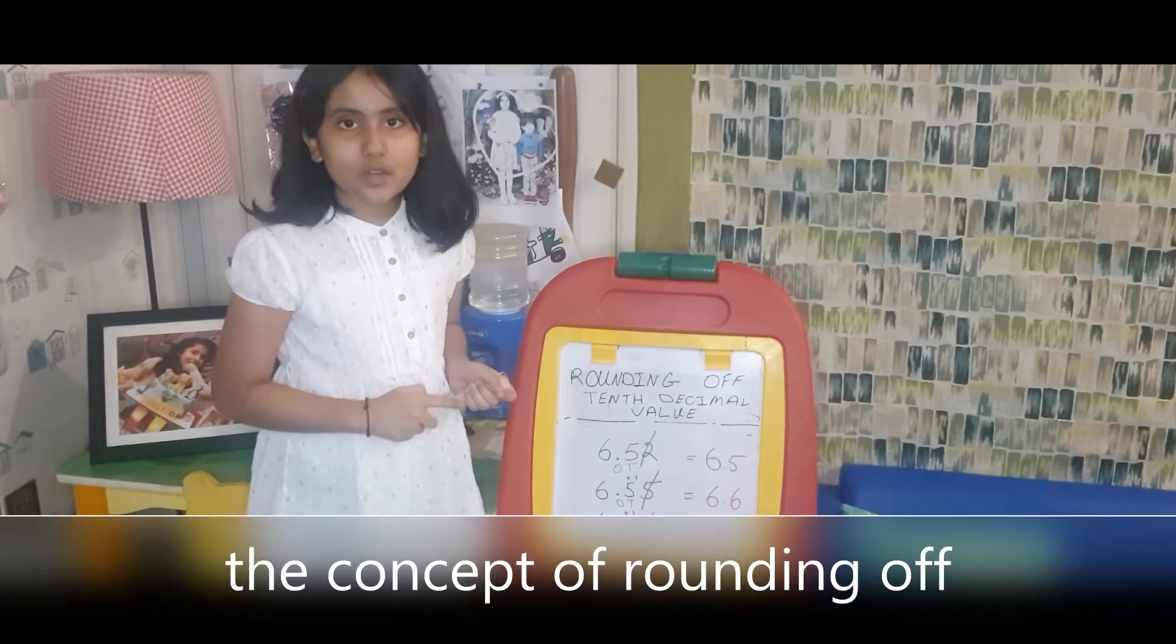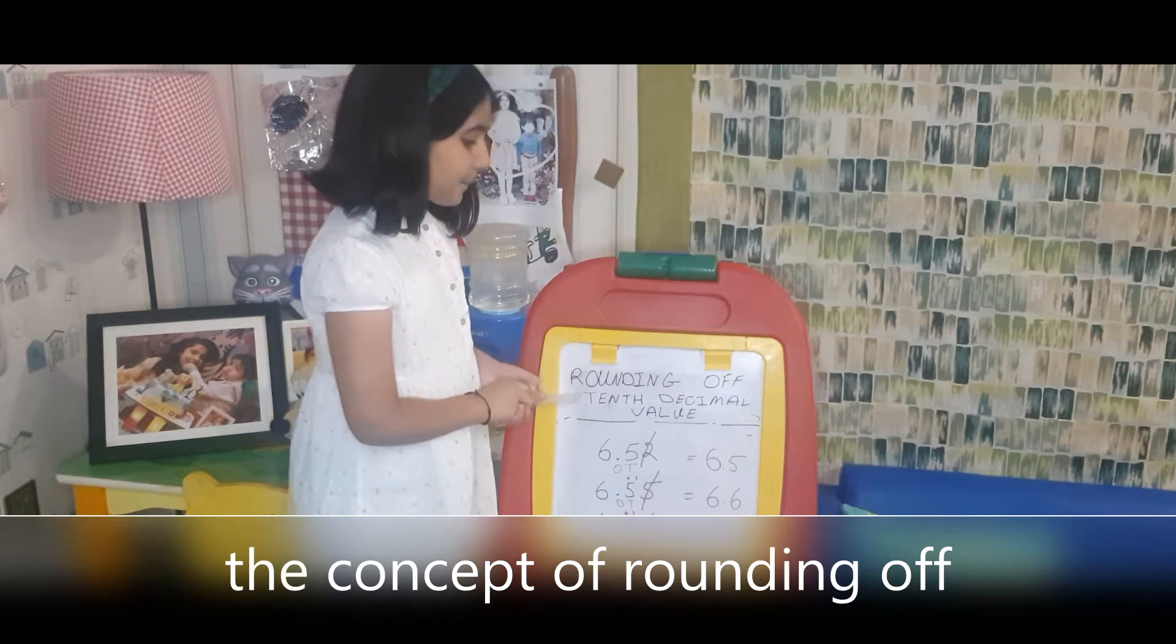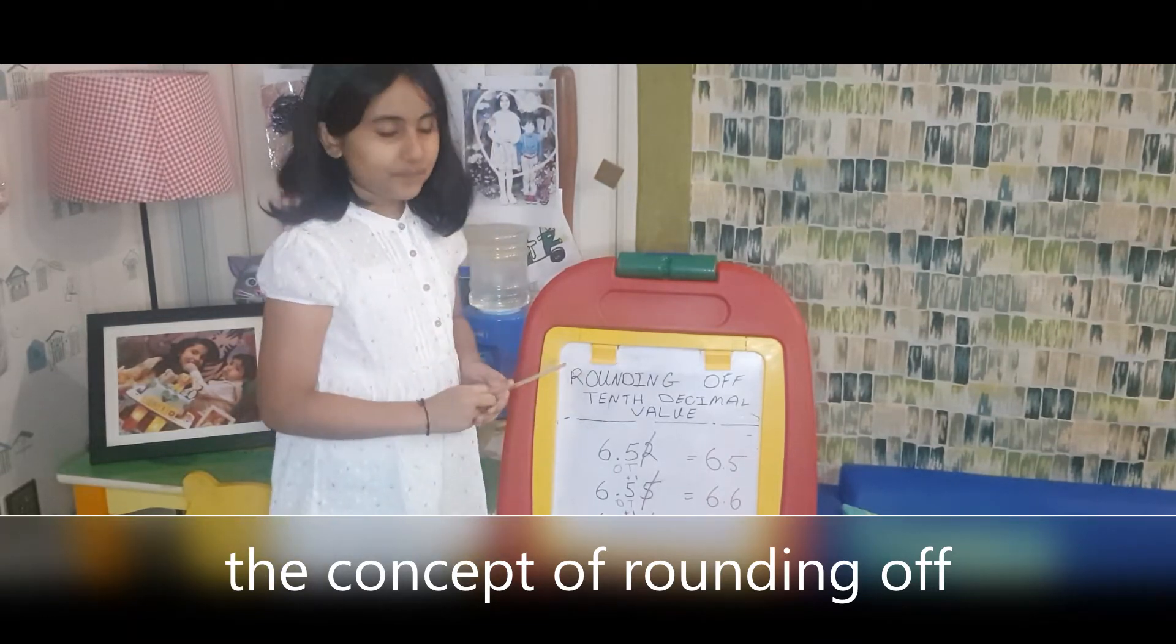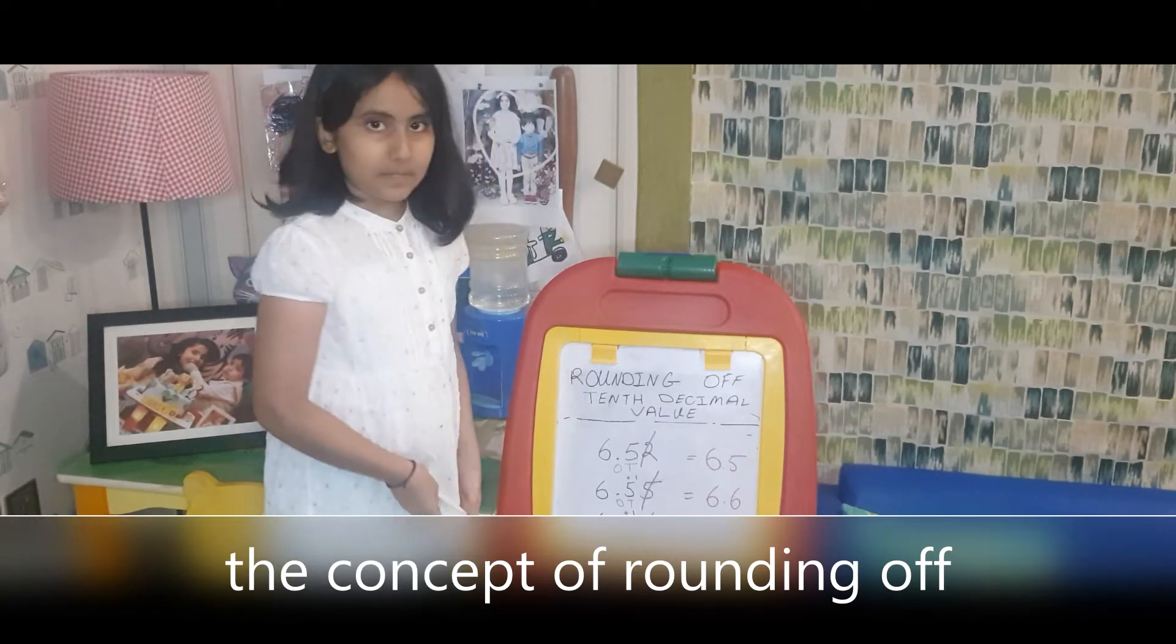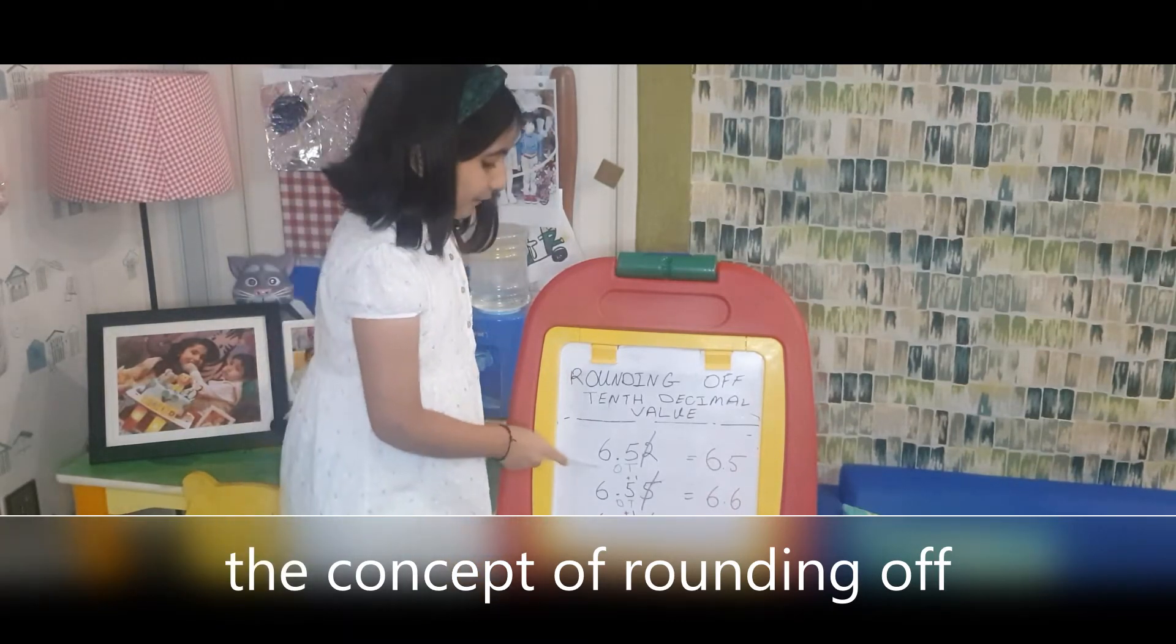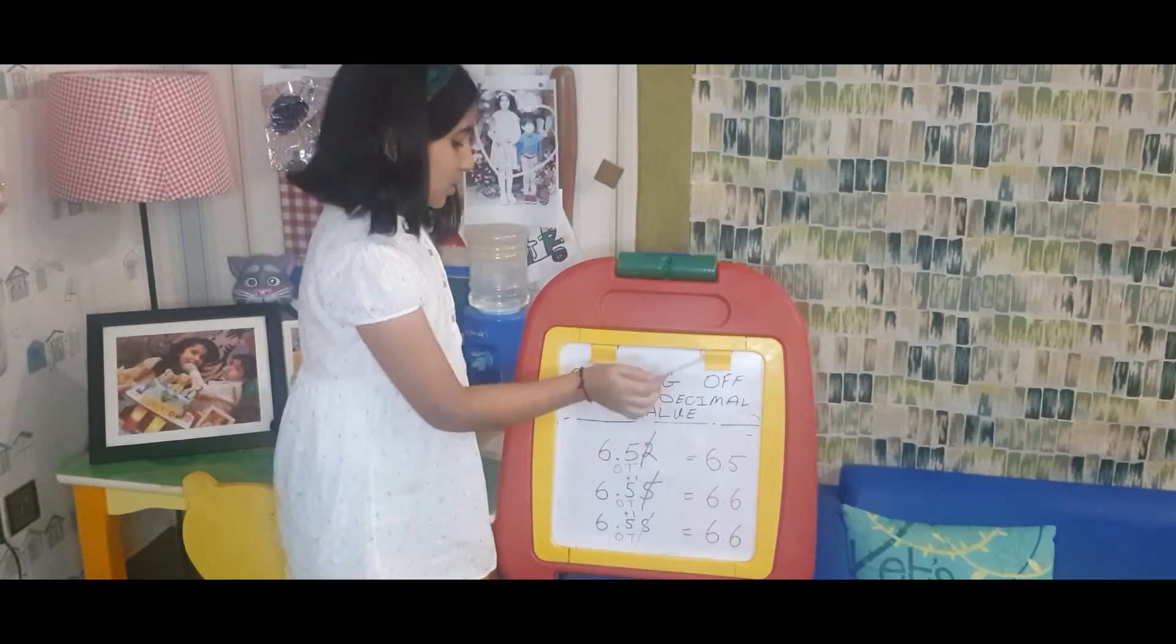In today's video, I'm going to show you how to round off a number to its tenth decimal value. I've got three numbers here as examples. The first number is 6.52, and I will find its tenth decimal value.